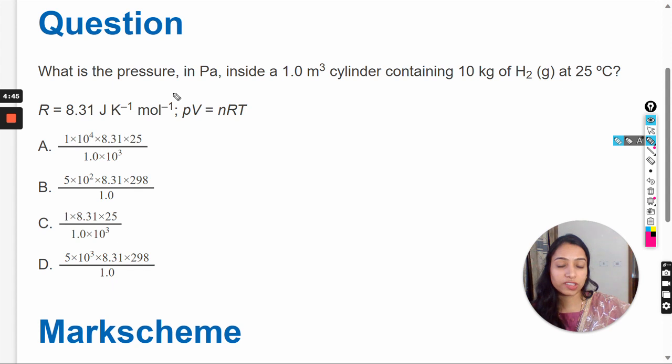So here R value is given, R is the gas constant, and the equation for the ideal gas is given.